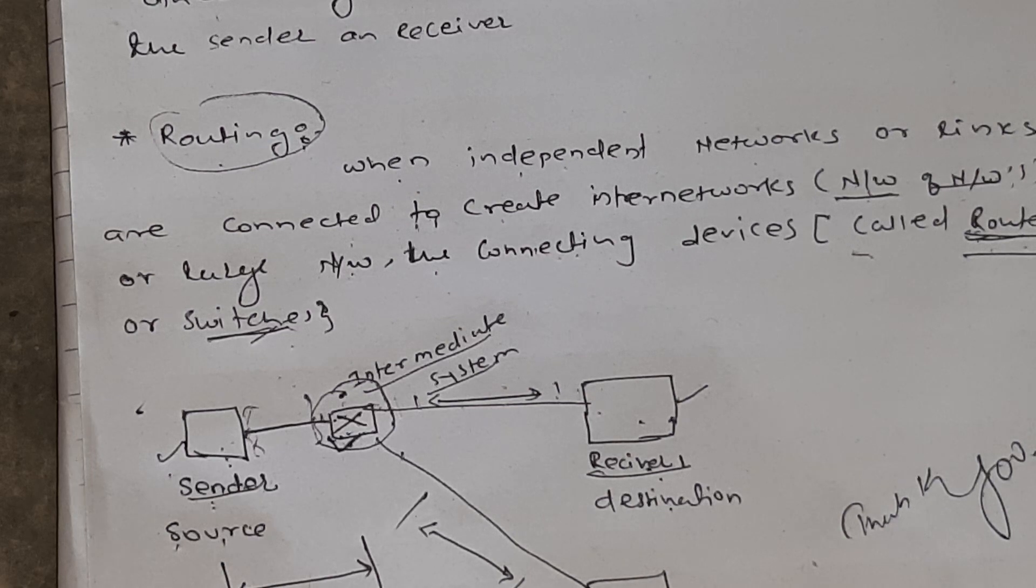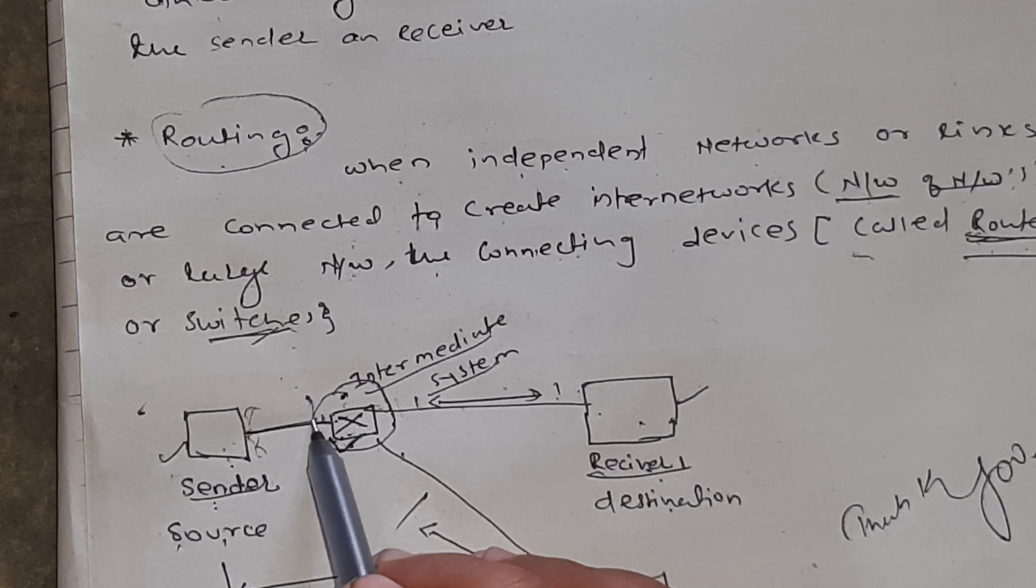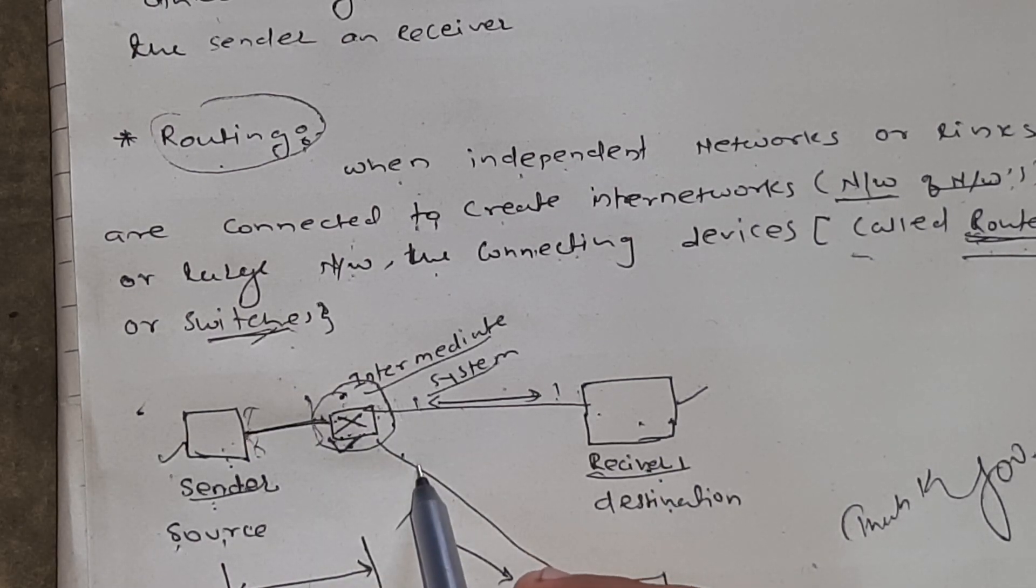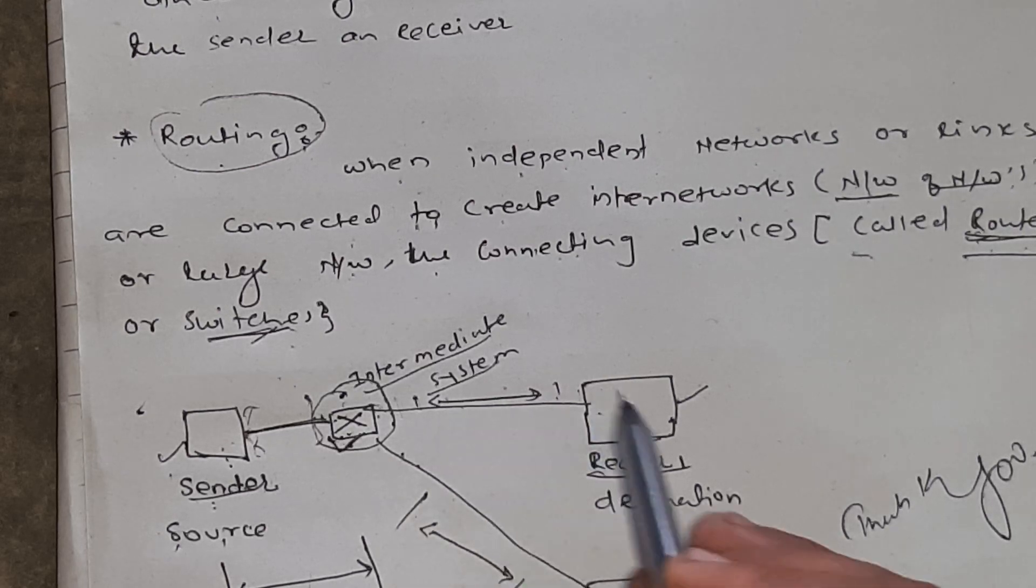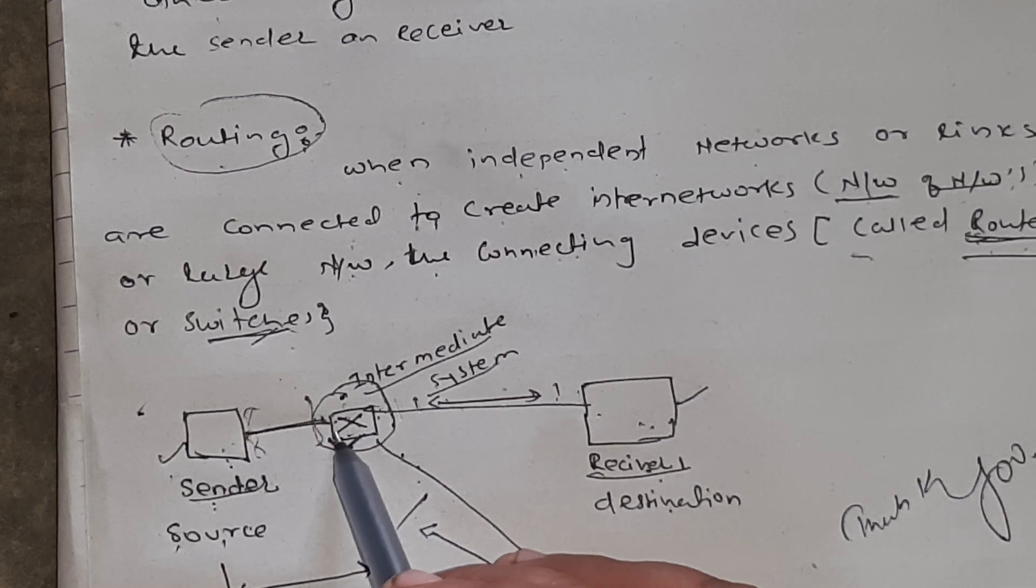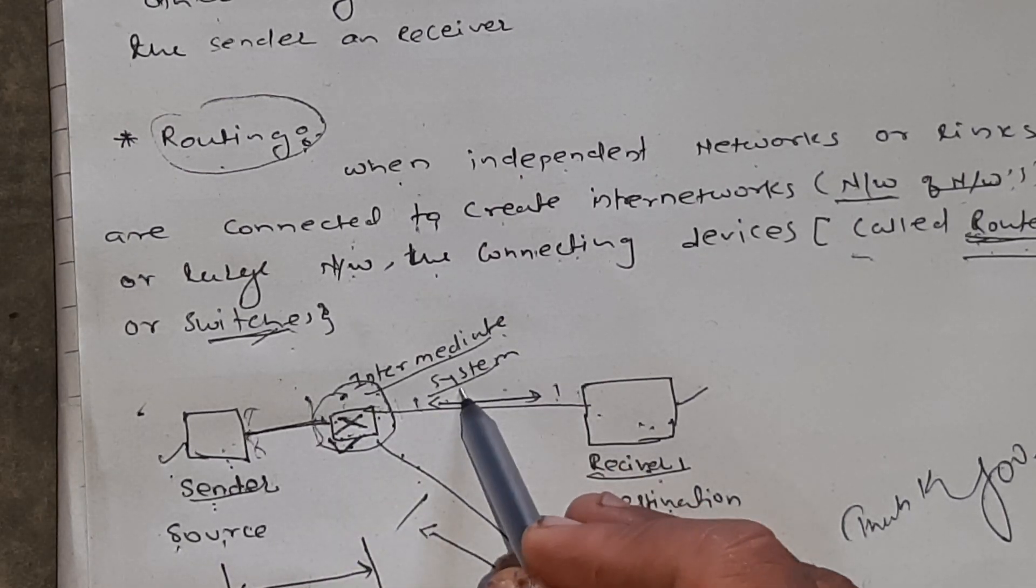Now, here, suppose this single link divides into two different links for receiver 1 and receiver 2. This link is divided by using a router. Router is nothing but an intermediator device or system.